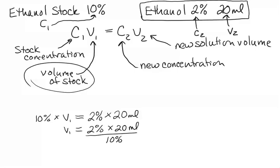We're going to solve for V1 here. Bring the 10% over to the right-hand side. Get rid of the percent signs - they're both in the numerator and denominator, so they cancel. Then simply do your math. 2 times 20 gives you 40 milliliters divided by 10 for a final volume of 4 milliliters to equal our V1, or the volume of stock that's needed to make our final solution.